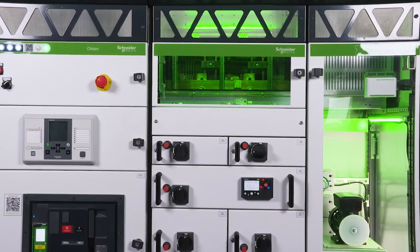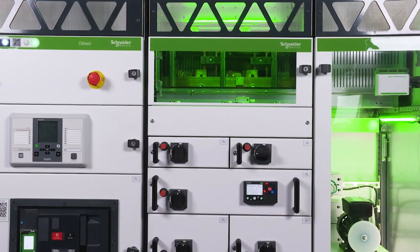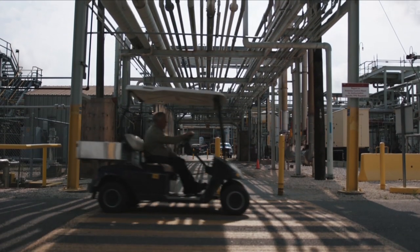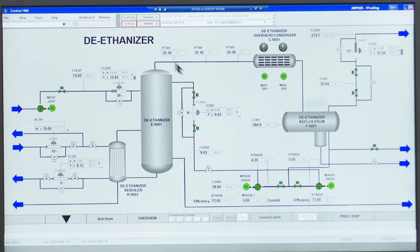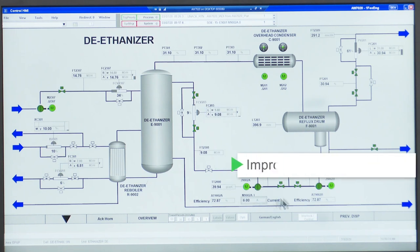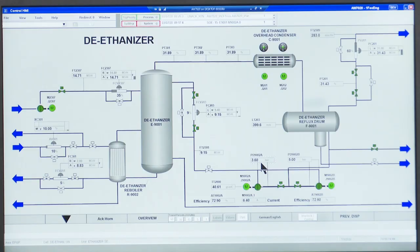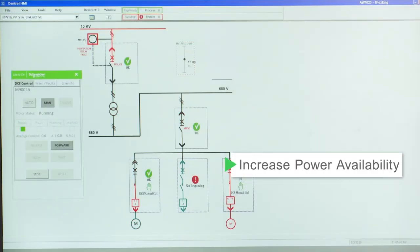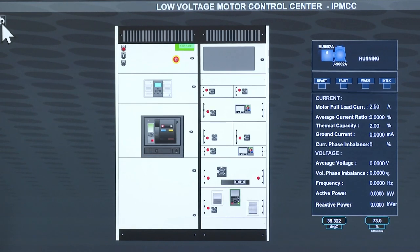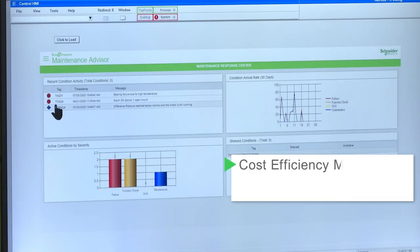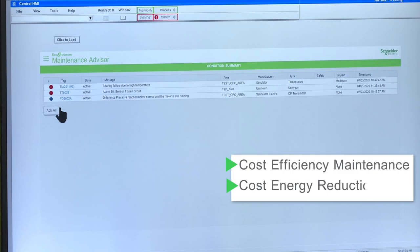The LV IPMCCs are fully integrated into EcoStruxure Power and Process Solutions and Advisors, which provide analytics and services with key benefits such as improved process efficiency leveraging data from both process and electrical, increased power availability with trip avoidance, load shedding, faster power recovery, cost-efficient maintenance, and energy cost reduction.